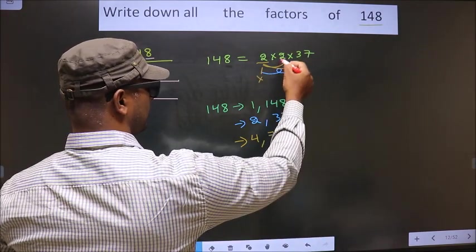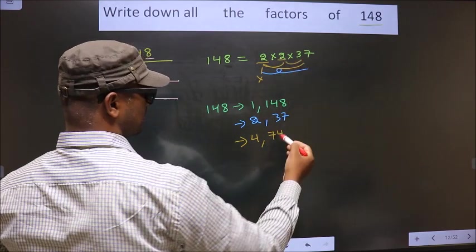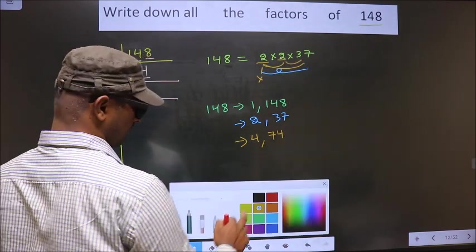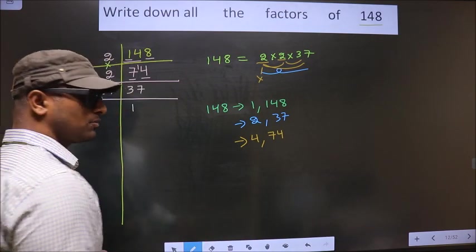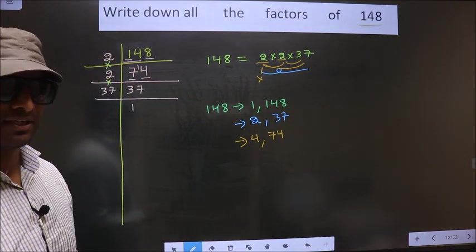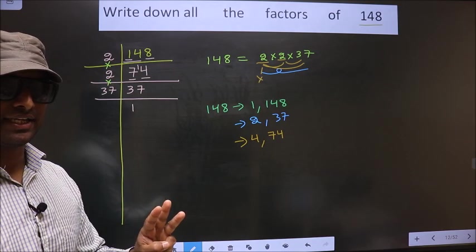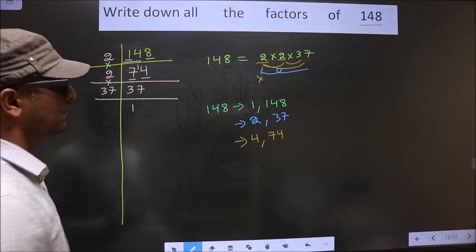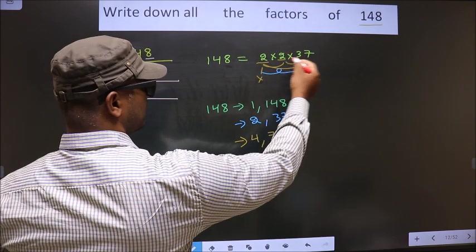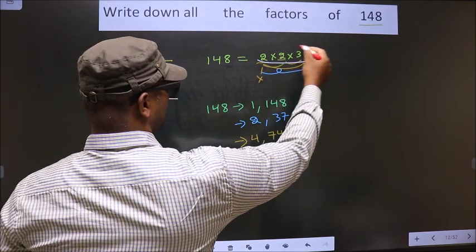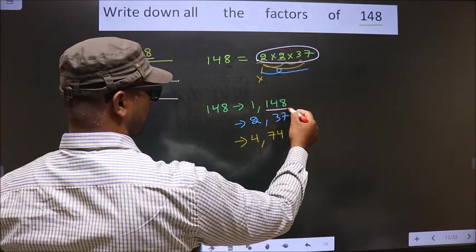Now you leave this 2, take this 2, combine with 37, still you get 74 itself. So no more combinations possible. Next. Now you take a combination of 3 numbers. How do we take it? See. Here we have only 3 numbers. If we take all the 3 numbers, we get 148 itself.